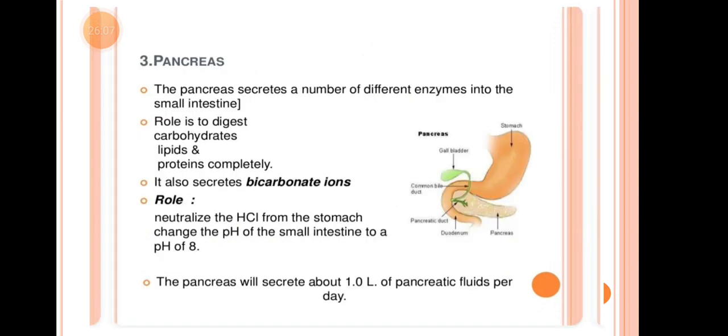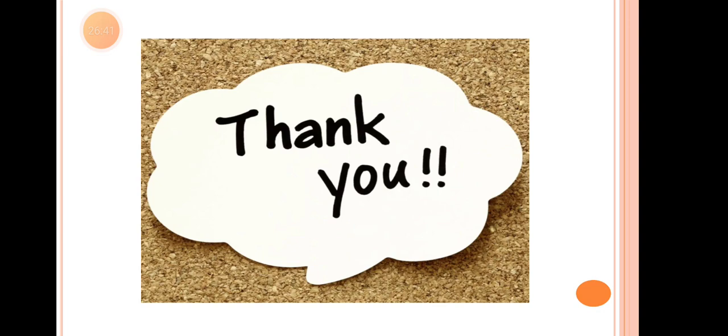Third is the Pancreas. The pancreas secretes a number of different enzymes into the small intestine; its role is to completely digest carbohydrates, lipids, and proteins. It also secretes bicarbonate ions. The roles of the pancreas include: neutralizing HCl from the stomach, changing the pH of the small intestine to a pH of 8. The pancreas produces about 1.0 liter of pancreatic fluid per day. Thank you so much.